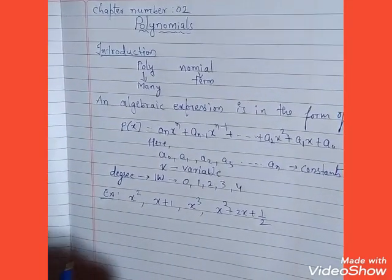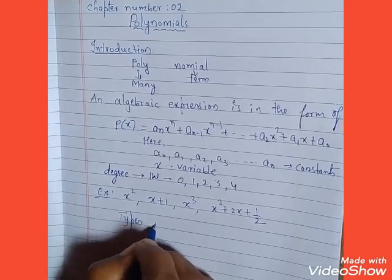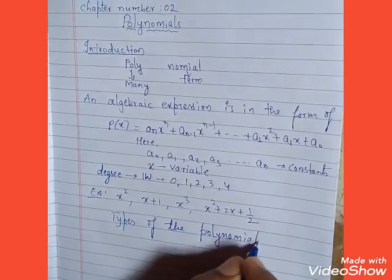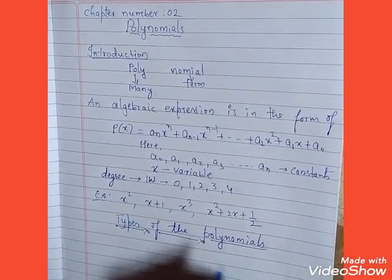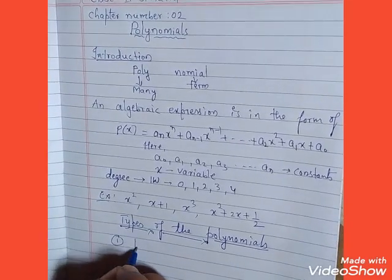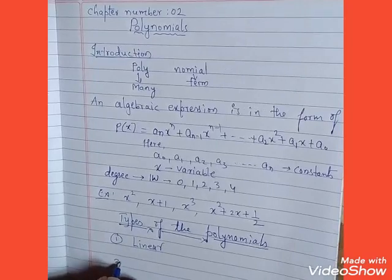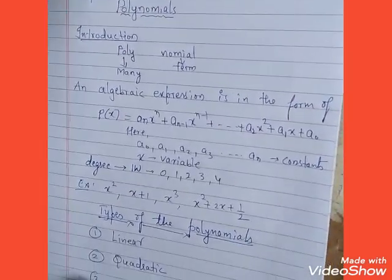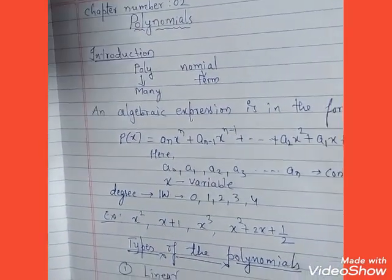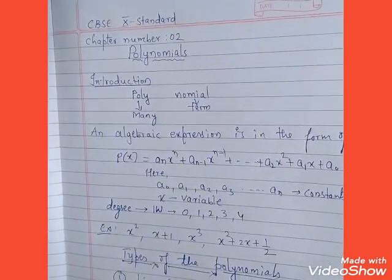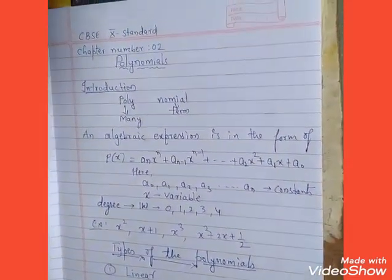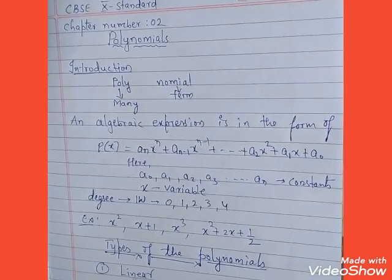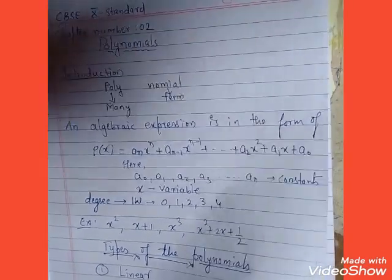Let us now discuss the types of polynomials in detail. The types of polynomials are: first, linear polynomial; second, quadratic polynomial; third, cubic polynomial. There are also two more: constant polynomial and zero polynomial, which we will discuss later. The important types are linear, quadratic, and cubic.